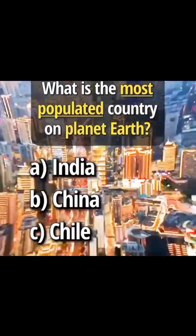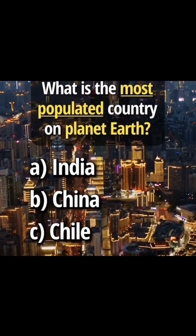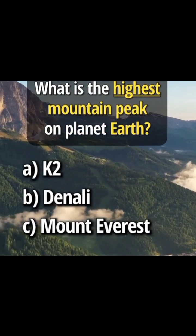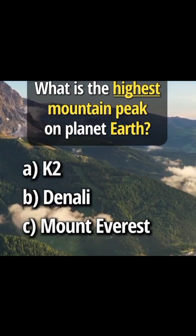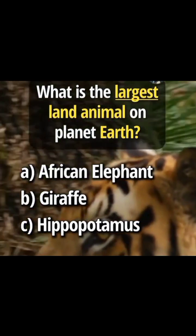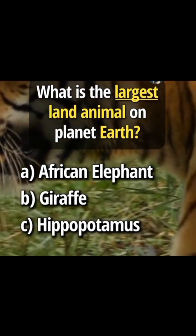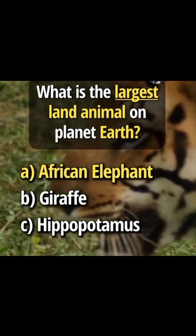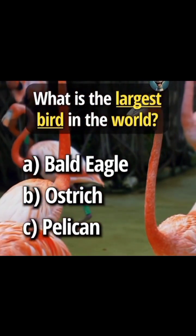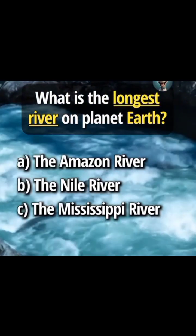What is the most populated continent on planet earth? Answer C: Asia. What is the most populated country on planet earth? Answer B: China. What is the highest mountain peak on planet earth? Answer C: Mount Everest. What is the largest land animal on planet earth? Answer A: African elephant. What is the largest bird in the world? Answer B: ostrich. What is the longest river on planet earth?